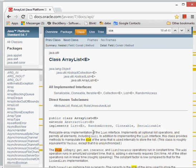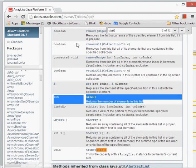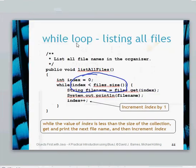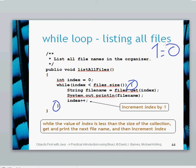We've got the while loop with open and close parentheses. Our Boolean statement in this instance is index is less than files.size(). The files.size() is an external method call using the files variable, which is of type ArrayList. If you go into the ArrayList API and search for 'size', you'll see that it returns the number of elements in the list. So that's the Boolean expression — while that's true, while we're going through all of the files, then execute the while loop body.